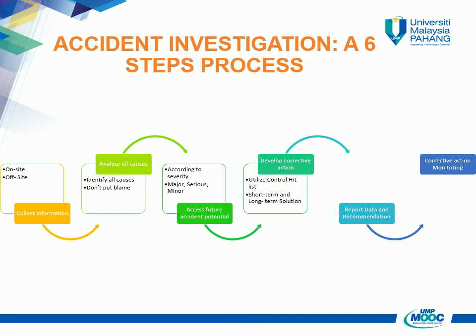In developing corrective action, the control applied must directly address each cause identified. We also need to consider short-term controls if permanent controls are not readily available. More than one control may be needed for some cases. We can use the control hierarchy list to make sure the best control has been found. The control hierarchy comprises five types: elimination, substitution, engineering controls, administrative controls, and lastly personal protective equipment.